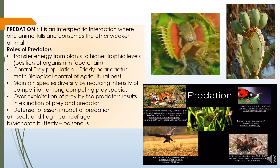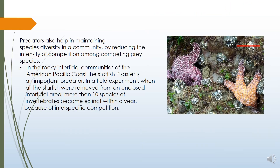You can see examples of different types of predators — the insect is feeding upon the leaves, so the insect is a predator on the leaves. Predators also help in maintaining species diversity in a community by reducing the intensity of competition among competing prey species. The intraspecific competition between organisms of the same species can be reduced by the effect of predators.